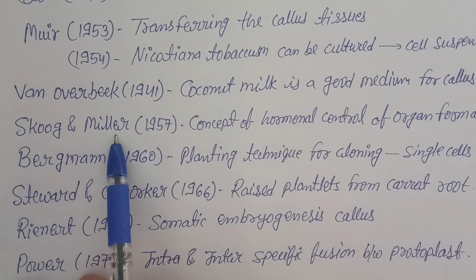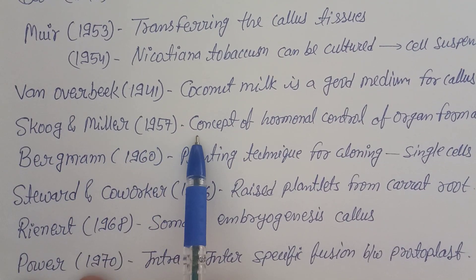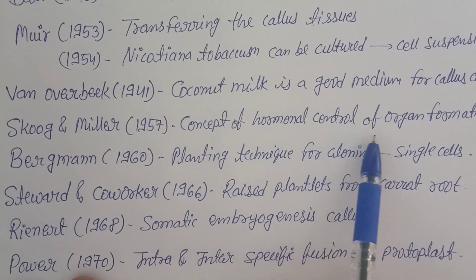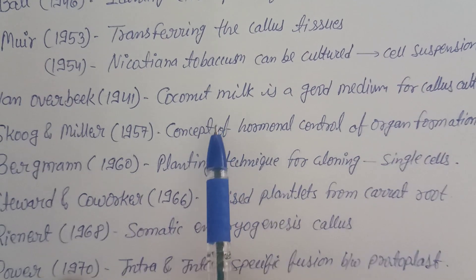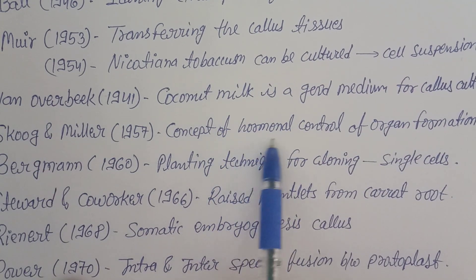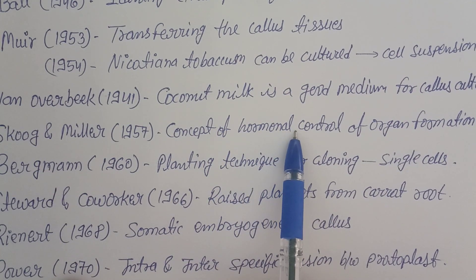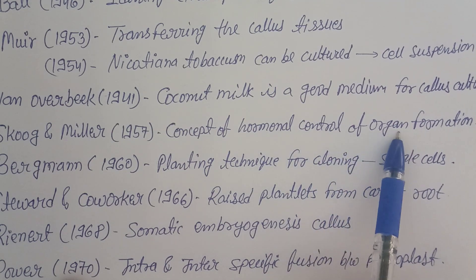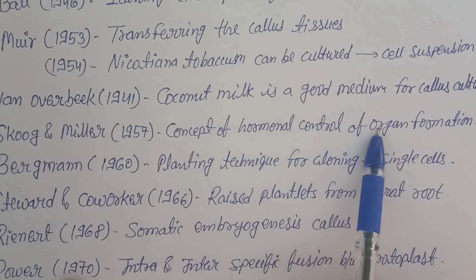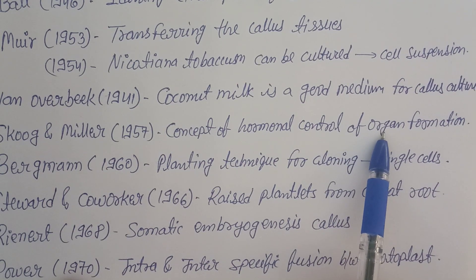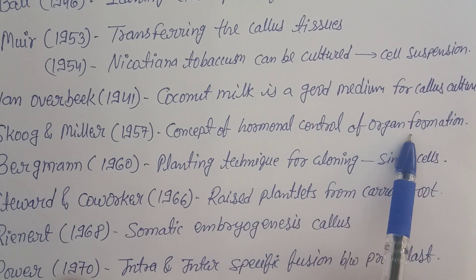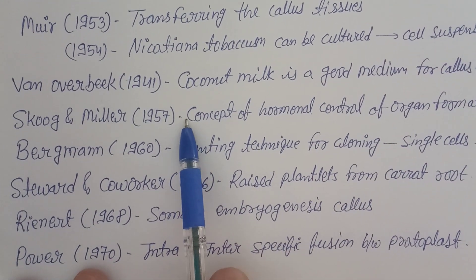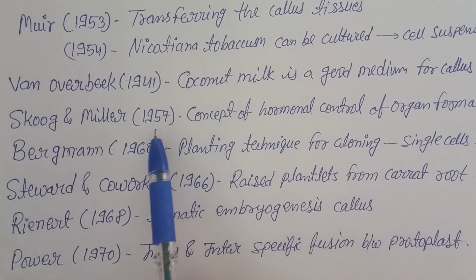Skoog and Miller in 1957 told about the concept of hormonal control of organ formation. Plant growth regulators — auxin levels, cytokinins — control hormonal regulation and are involved in cell multiplication, cell division, and organ formation of the plant. This was a major contribution in 1957.